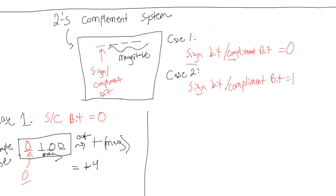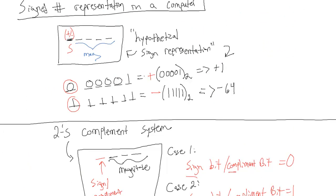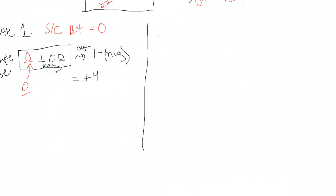There's nothing different about this case and the hypothetical case we made up here. It's exactly the same. Now, the difference comes in case 2, when the sign slash complement bit is equal to 1.